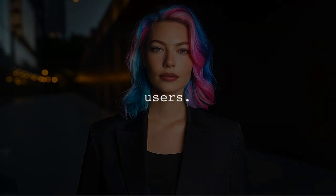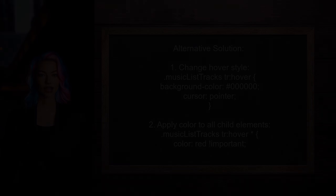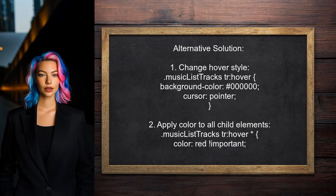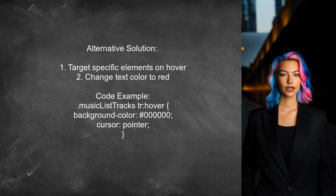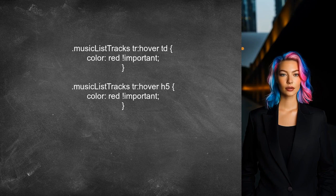Now let's look at the answers provided by other users. An alternative solution suggests modifying your CSS to ensure all text within the row changes color on hover. Instead of applying the color change directly to the row, you can target all child elements using a wildcard selector. Another alternative suggests that instead of targeting all elements inside the table cells, you can specifically target the span and H5 elements. By using the hover effect on the table row, you can change the text color of these elements to red when hovering over the row.